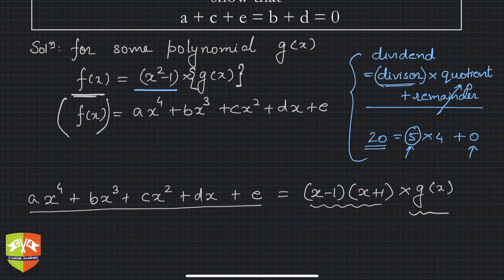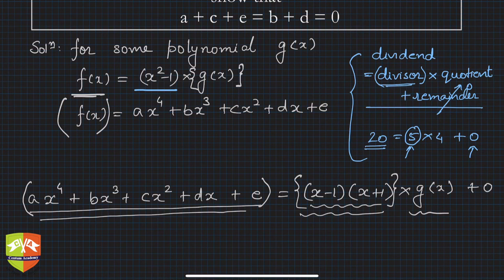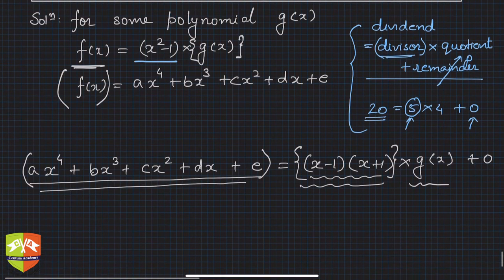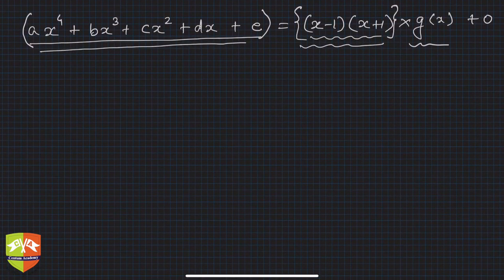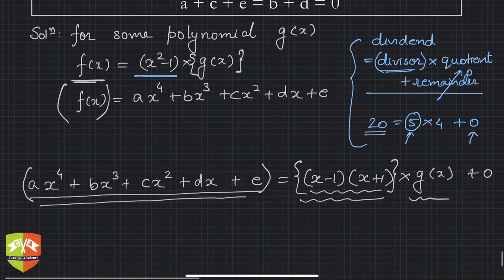So some g(x) is a polynomial which, when multiplied by (x² - 1) — which itself factors into (x - 1)(x + 1) — gives us this particular polynomial. This is the given relationship, and this is what we have to use to prove that a + c + e = b + d = 0.